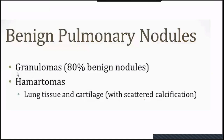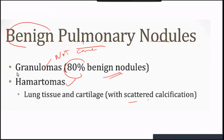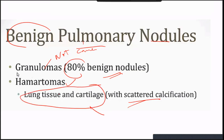Benign pulmonary nodules: these are granulomas, not cancers. They can be hamartomas with scattered calcification, lung tissue, and cartilage arranged haphazardly — presenting as a benign nodule in the lung.